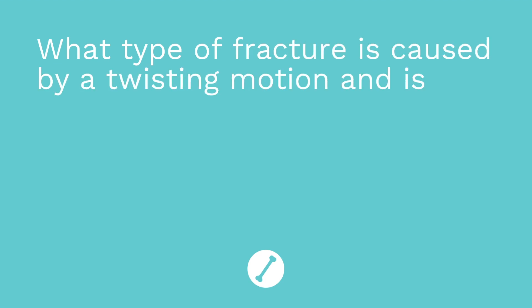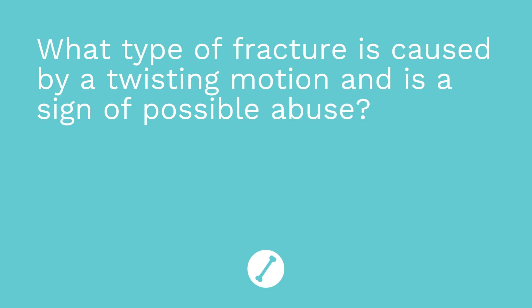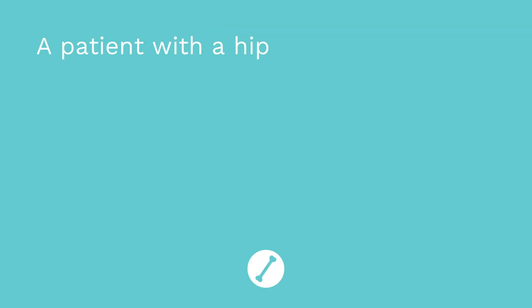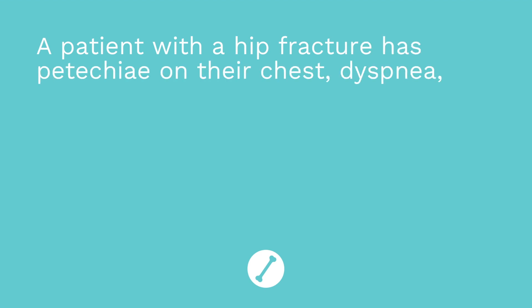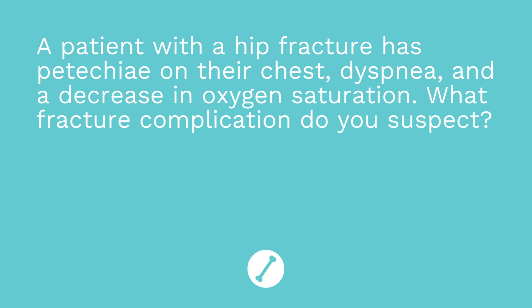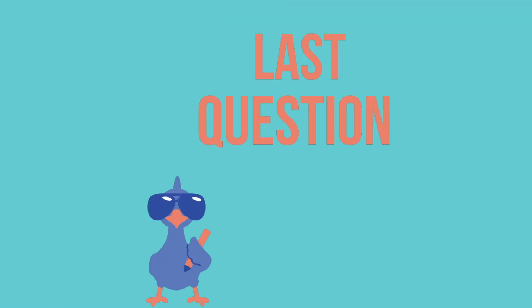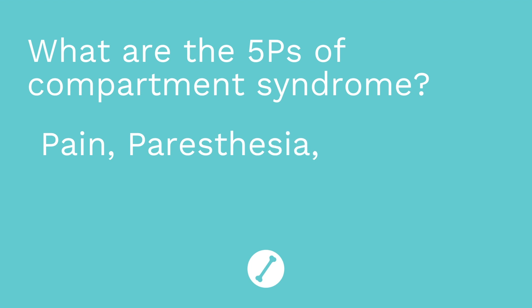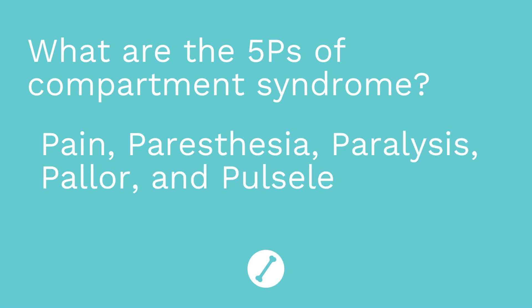It's time for a quiz — I have three questions for you. Question one: what type of fracture is caused by a twisting motion and is a sign of possible abuse? The answer is a spiral fracture. Question two: a patient with a hip fracture has petechiae on their chest, dyspnea, and a decrease in oxygen saturation — what fracture complication do you suspect? The answer is a fat embolism. Question three: what are the five Ps of compartment syndrome? The five Ps include pain, paresthesia, paralysis, pallor, and pulselessness.